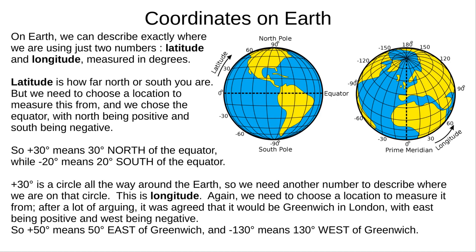Latitude goes up to plus 90 degrees at the North Pole and minus 90 degrees at the South Pole. But if we say plus 30 degrees, that's anywhere on a circle — a line all the way around the Earth. So we need to say where we are on that line, and for this we use longitude. We decided to use Greenwich in London for the zero mark, and said east is positive and west is negative. For example, plus 50 degrees means 50 degrees east of Greenwich, and minus 130 degrees means 130 degrees west of Greenwich. Longitude goes up to plus 180 degrees and minus 180 degrees.